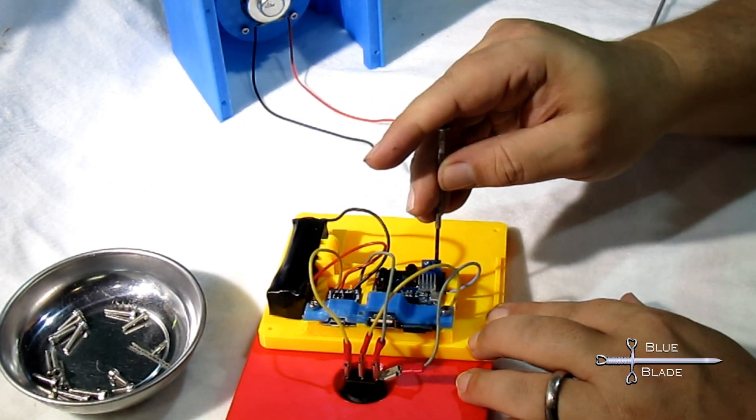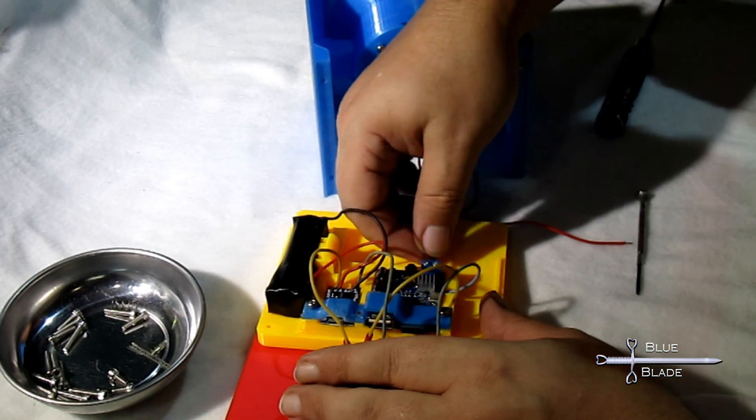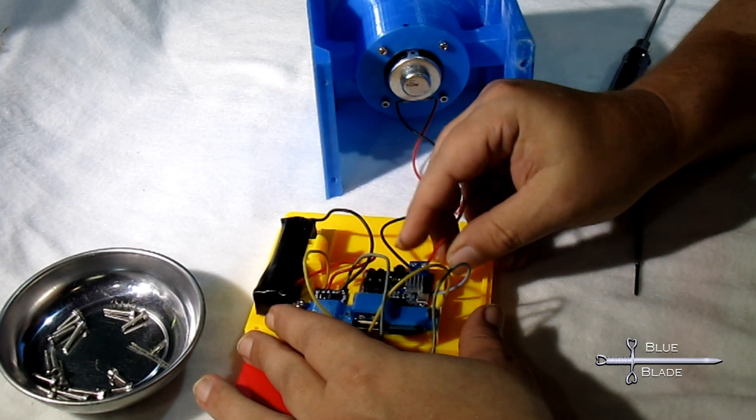To connect the speaker, loosen the screws for the terminal block on the MP3 board. Then thread one end of each of the speaker wires into a spot on the block and tighten it up to secure it in place.